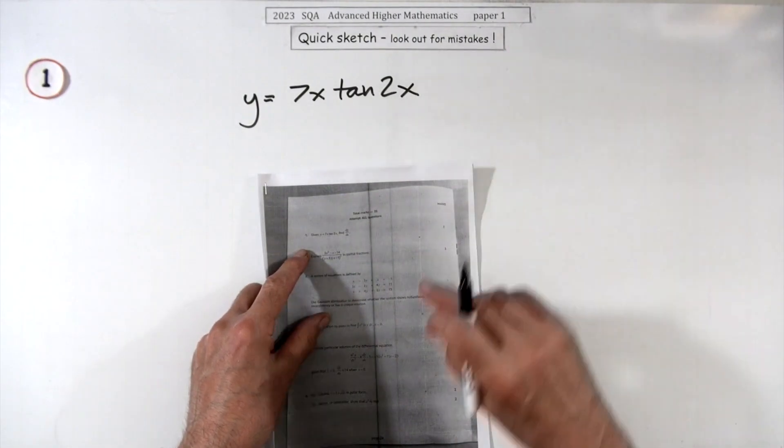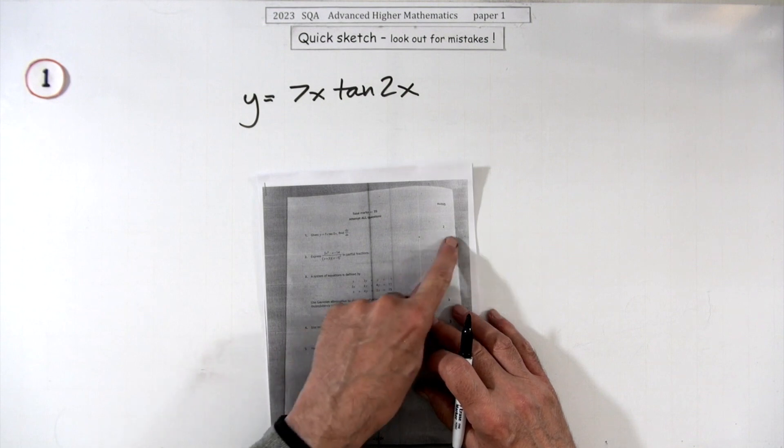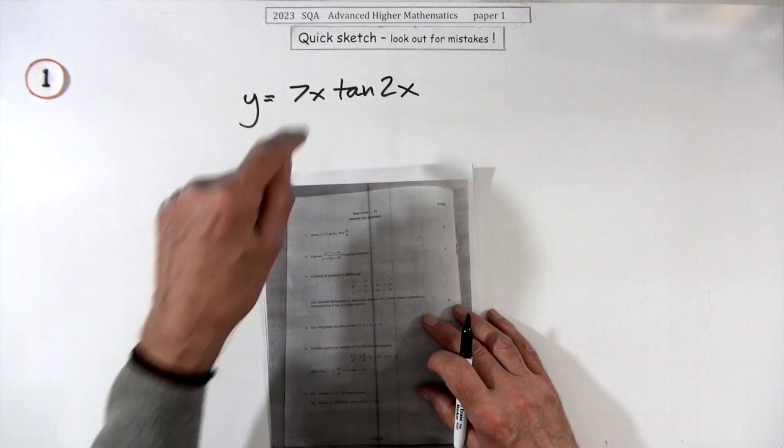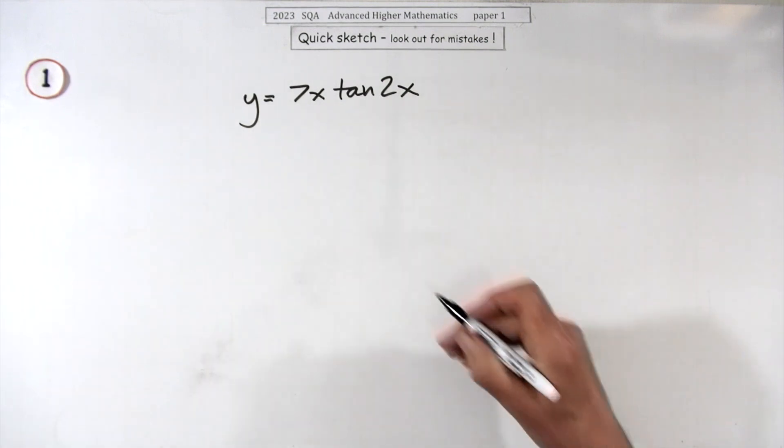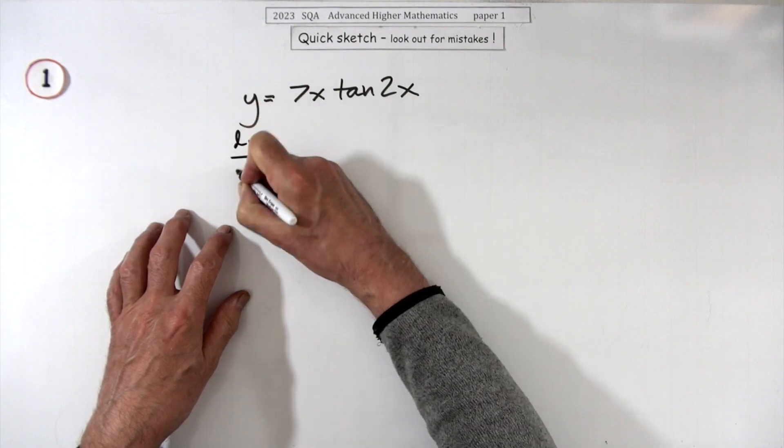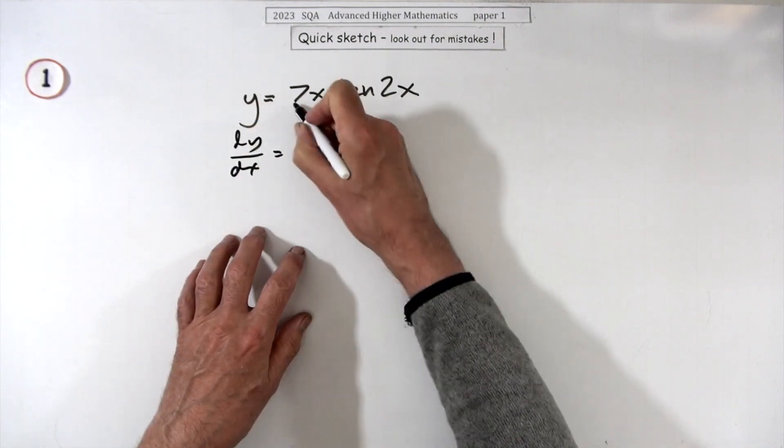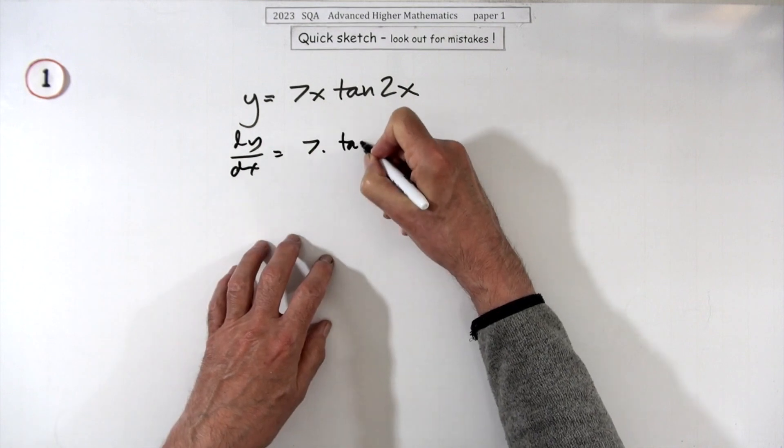So number one, the first question in paper one of the 2023 Advanced Higher: two marks for this little differentiation here. Find dy/dx. Well, it's just a little product, isn't it? Differentiate 7x, that'll be 7, leave that one alone.